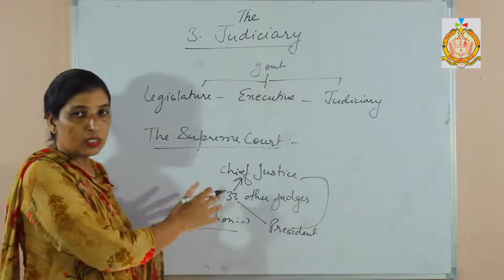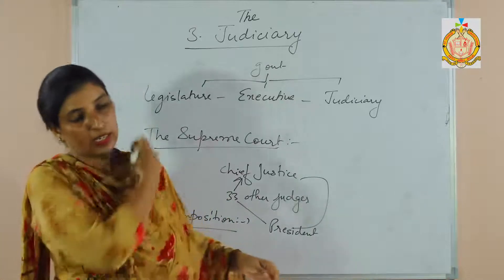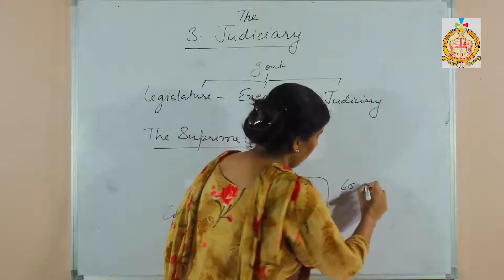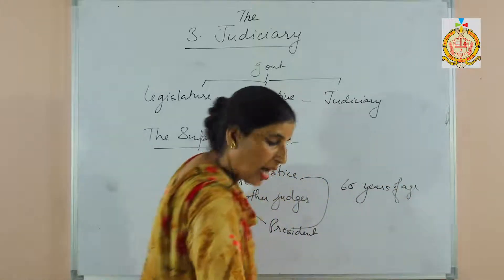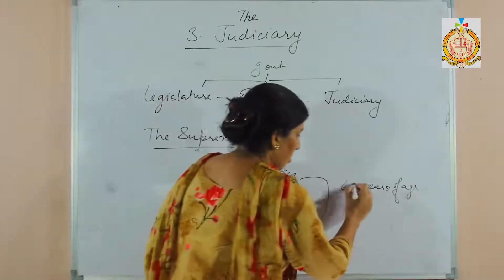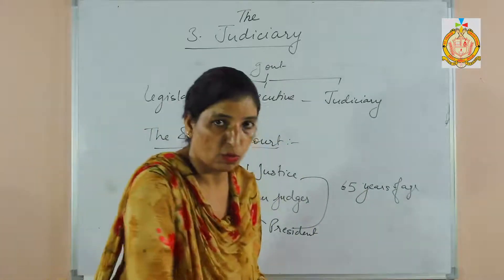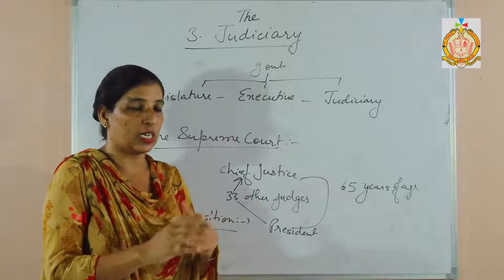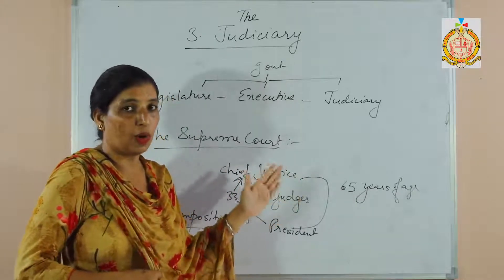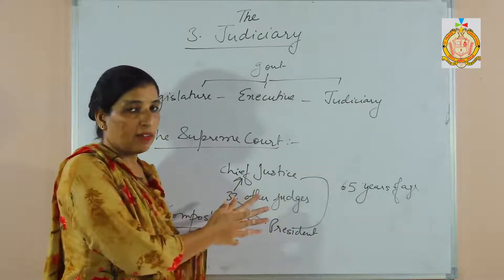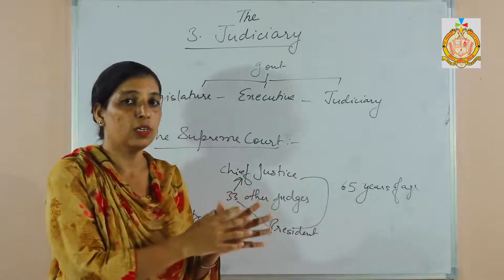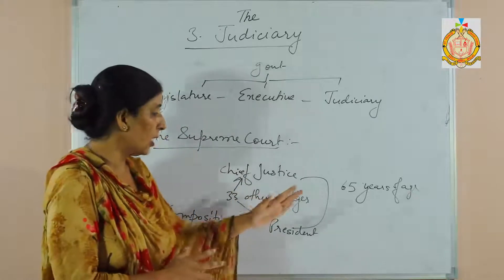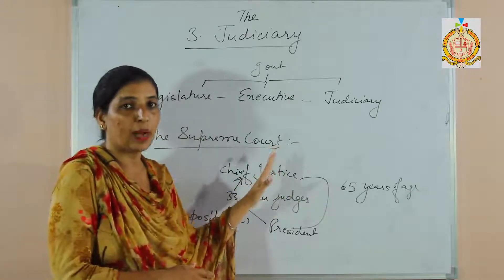How long do judges of the Supreme Court perform their duties? No fixed term is mentioned — only an age limit of 65 years is given. Till that age, judges of the Supreme Court can perform their duties. However, there is one process called impeachment: if a majority of Parliament house members pass a resolution against any judge — if he is not doing his work properly, if he is found to have violated the Constitution, or if he proves misbehavior or incapable — then through impeachment, the judge can be removed from office by the President.